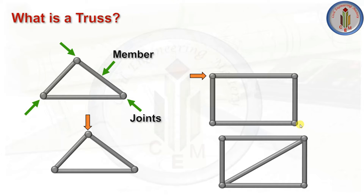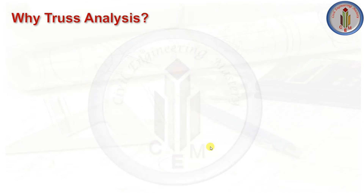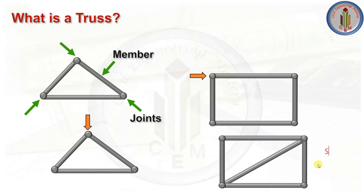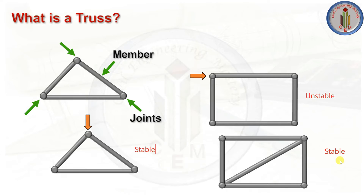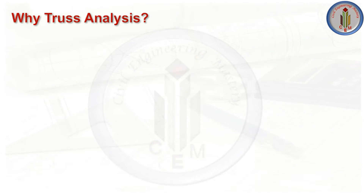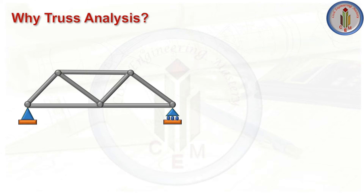To make a rectangle into a stable truss, we add one inclined member, making it into two triangles. Now when the load is applied on this truss it will not deform — so this one is stable. The rectangle alone is unstable, but with the diagonal member it becomes stable. This is the basic concept of what a truss is.